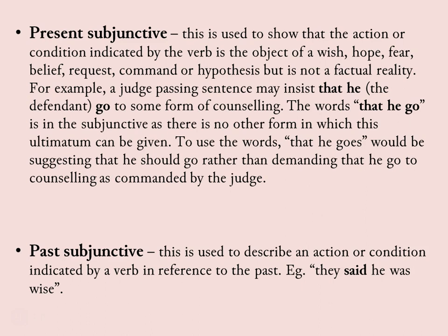The subjunctive has two forms: the present and the past. This type of verb is about expressing a wish, a hope, a fear, a belief, a request, a command, or a hypothesis — but something that's not factual reality. It's not much used in modern language, but it was commonly used in the Old English period. The past subjunctive is again the same sort of thing, but with reference to the past.